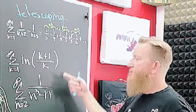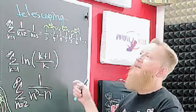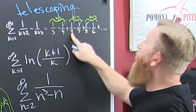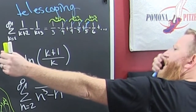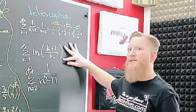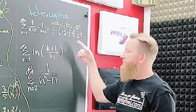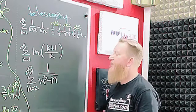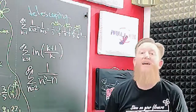Now these examples are going to go through lots of things, but this is the video on the usual suspects of series. I've always wondered why they call it telescoping — I guess maybe it's because it just collapses on itself. This one's going to take some rewriting using logarithm properties before it becomes telescoping. This one needs some factorization and some partial fractions, and then it becomes telescoping — and it's not always going to be the first term that survives.